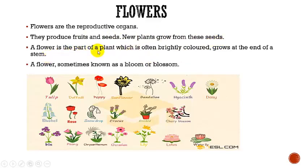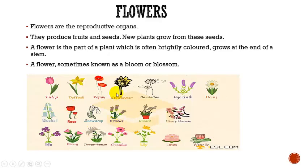A flower is the part of a plant which is often brightly colored and grows at the end of a stem. You all have seen beautiful flowers all around. A flower is sometimes known as a bloom or blossom. Here you can see different types of beautiful flowers: tulip, sunflower, daisy, lotus, lily, water lily, and so on.